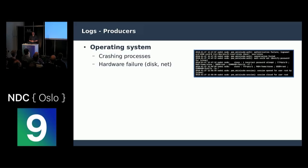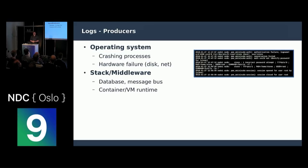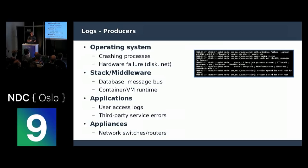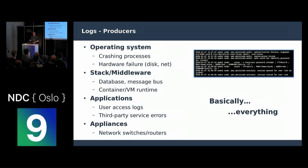Where can we get some logs from? Well, the operating system will produce many logs for you. Your stack or middleware, your databases — they'll all give you logs about what you're doing with them. Your applications and third-party applications — these logs contain a wealth of information to work out why something isn't working. And even hardware: if you've got network switches and routers, they'll give you quite useful information as well. Basically everything that has something to do with computing will give you logs.